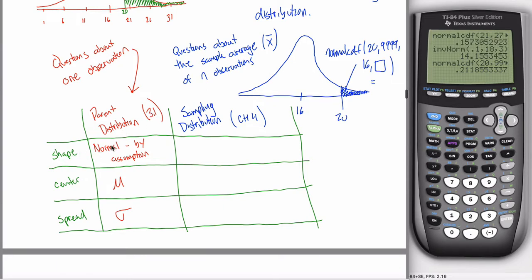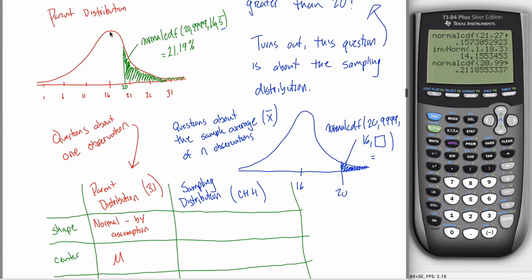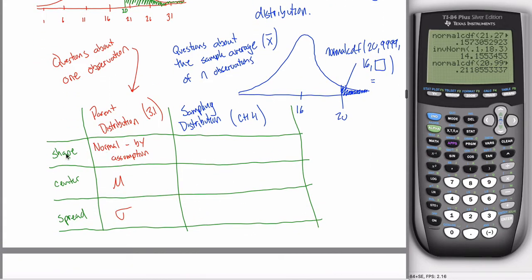We've already discussed shape, center, and spread for the parent distribution. The shape in every single Chapter 3.1 question was normal — because the problem told you that the parent distribution was normally distributed. Every single problem said that; you probably got to the point where you didn't even notice it anymore. The center was always given by mu, the population average, and the spread was always given by sigma, the population standard deviation. The questions were always about one observation.